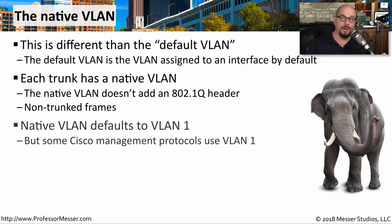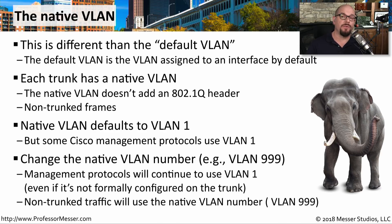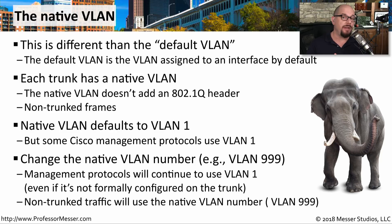If you look at the default configuration of a Cisco switch, for example, the native VLAN is defaulted to VLAN 1. One of the challenges with this is that a number of Cisco management protocols are also using VLAN 1 to communicate. So you may have management protocols and other types of user traffic using exactly the same link without having any type of 802.1q header. To separate out any of your user traffic from your network management traffic, you may want to change the native VLAN number to be some other value. For example, you could use VLAN 999 as the native VLAN, and your management traffic will still continue to run over VLAN 1.